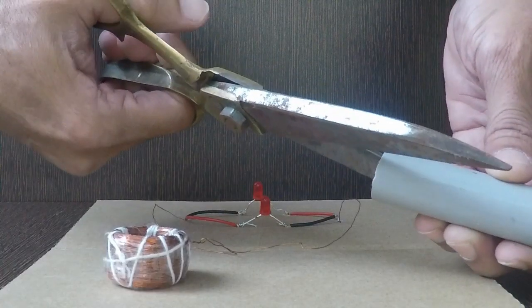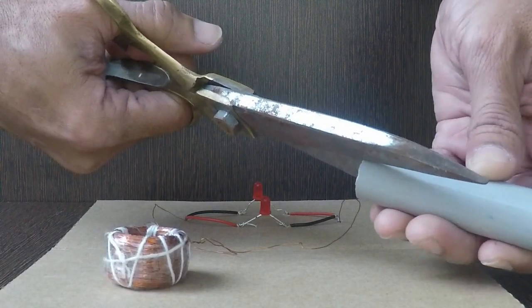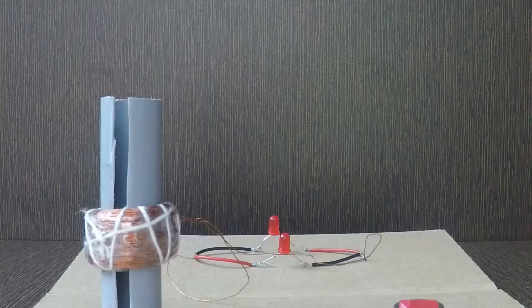We will cut the PVC pipe slightly. The gap enables us to see the position of magnets as they are dropped from the top.